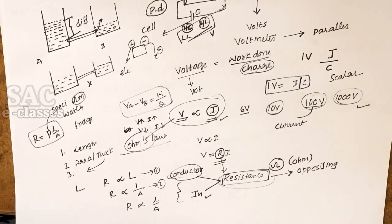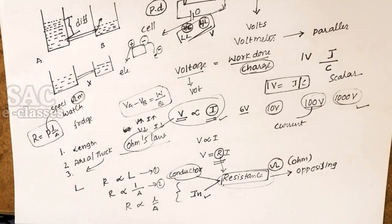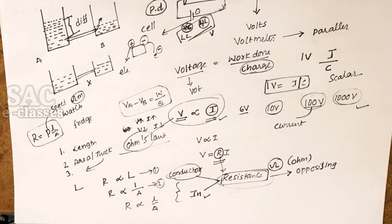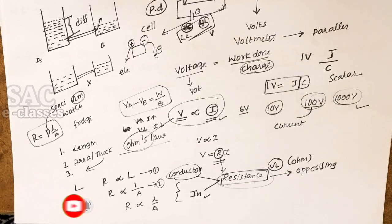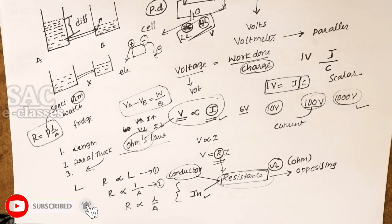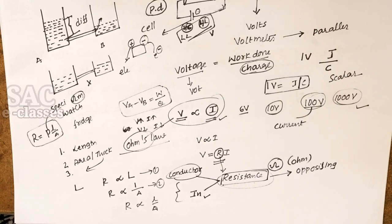In the next video — IIIT Entrance Examination Current Electricity Part 2 — we will cover resistance in more detail. This video covered current electricity: types of electricity, why current is positive or negative, electron calculations, charges, potential difference, numericals, units, measurements, and instruments. For more educational videos especially in MPC, please subscribe, share, and like the channel. SAC eClass is a specialist learning center for everyone. Thank you for watching.